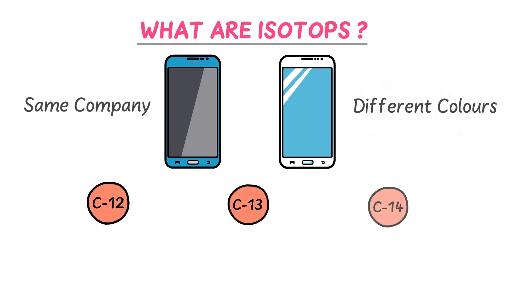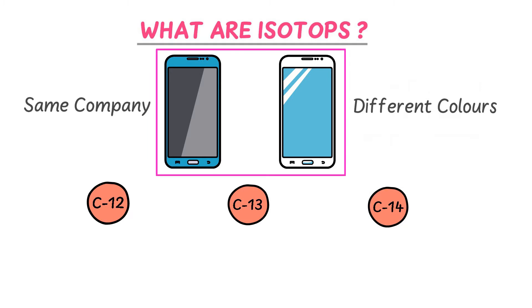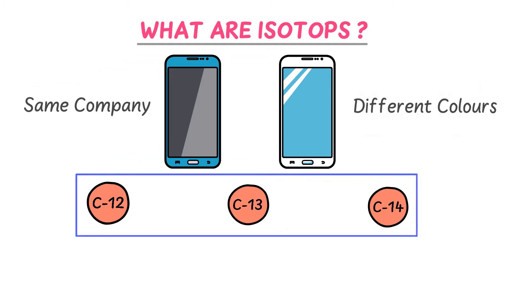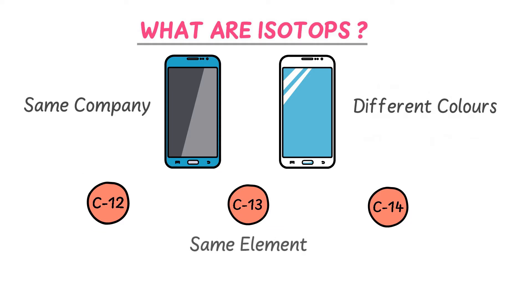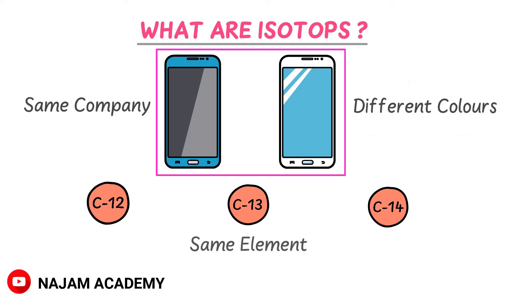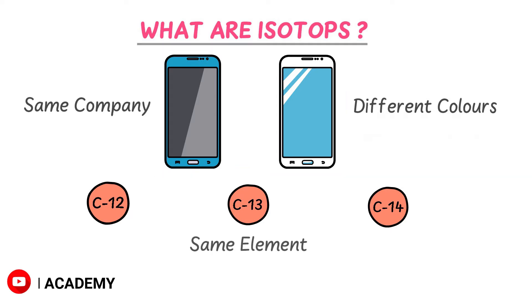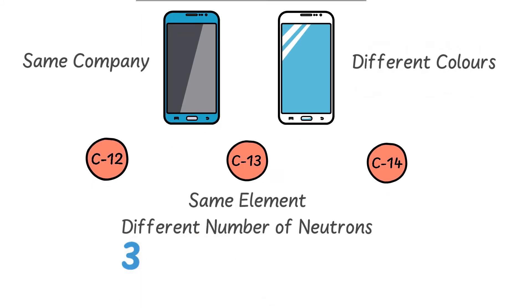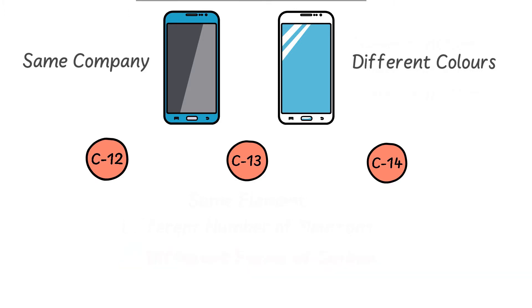Just as these cell phones are from the same company, similarly these atoms are from the same element. Also, just as there is only a difference in color between the cell phones, here there is only a difference in the number of neutrons among these atoms. Carbon-12, carbon-13, and carbon-14 are three different forms of the carbon element.